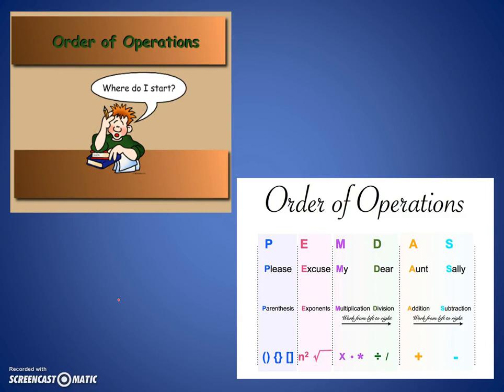The P helps us remember that we do the parentheses first. Parentheses can look like rounded parentheses or these kinds of brackets you see here. The E stands for exponents. They really could be for exponents or they could be for roots. The M is for multiplication and the D is for division. We do those in order from left to right, whichever appears first.